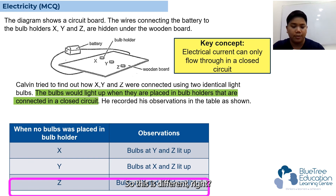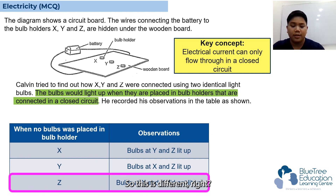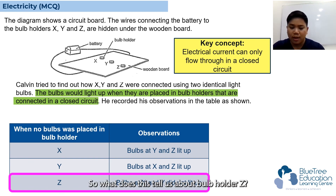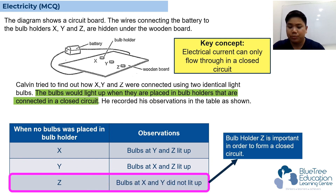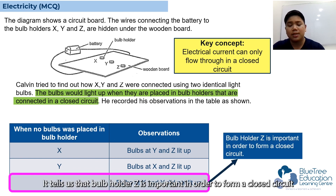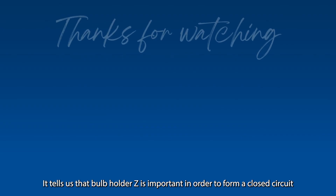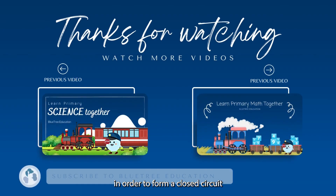So this is different. So what does this tell us about bulb holder Z? It tells us that bulb holder Z is important in order to form a closed circuit.